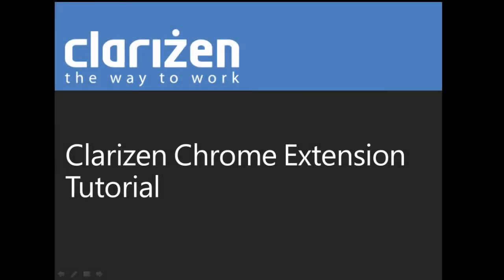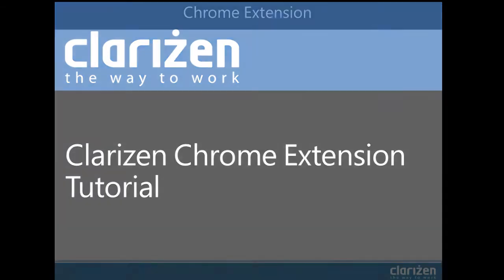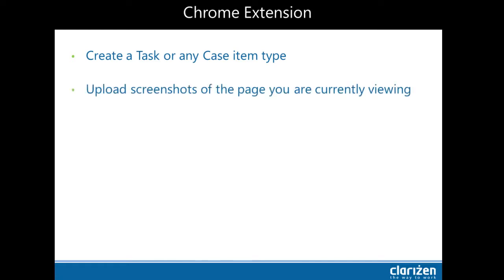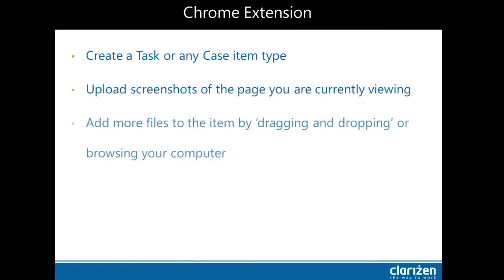The Clarizen Chrome extension is a powerful tool that allows you to create tasks and/or cases such as risks or enhancement requests from your Google Chrome browser directly into your Clarizen account. The main capabilities of this tool are to create a task or any case item type, to upload screenshots of the page you are currently viewing, and to add more files to the item by dragging and dropping or browsing your computer.